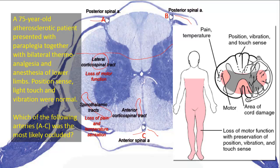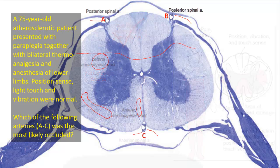Sensations of fine touch, vibration, and proprioception are carried by the posterior columns and are preserved, since they are located in the area supplied by the posterior — not anterior — spinal arteries. Note that the area supplied by the anterior spinal artery is much larger than the area supplied by the posterior spinal arteries.